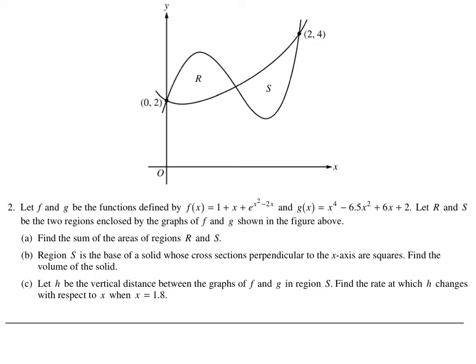To get the area of r, we have to get that intersection. To get that intersection, we simply type it in our calculator. When we use the functions of our calculator to find the intersection, I'm going to call the intersection (a, b). My intersections — I'm going to call them a, b.